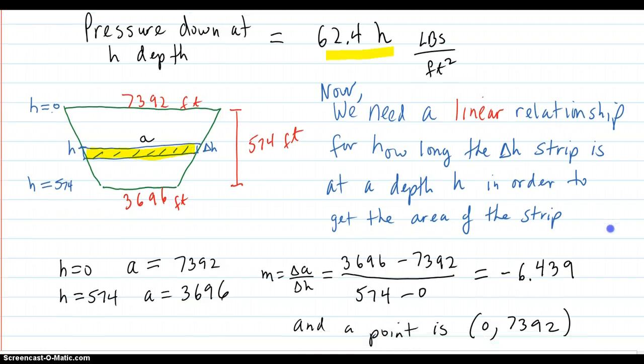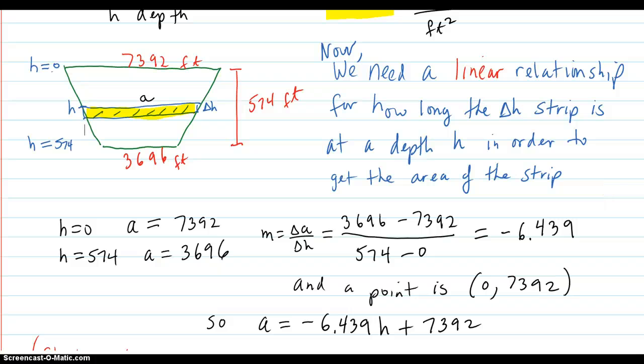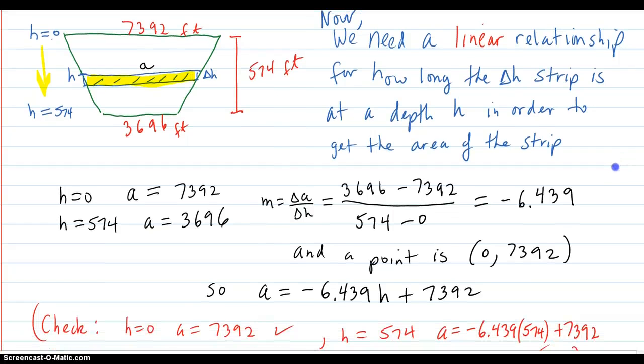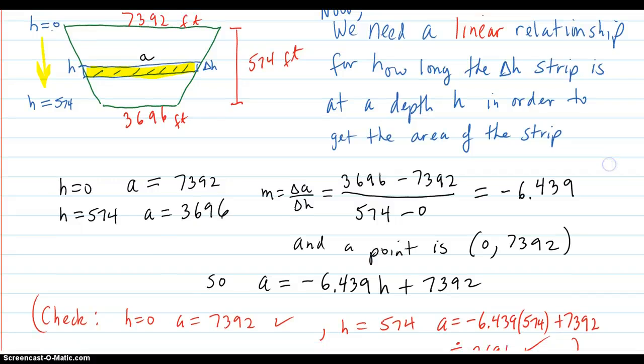We need to have a relationship between the height going down and how wide it is across the trapezoid. So it's a linear relationship because those sides are linear. We do it this way: when h is zero at the top, the length across, which I'm calling a, is 7,392. When h gets to the bottom of the depth, it's 574 feet deep, the length across there is 3,696 feet. So two points determine a line.